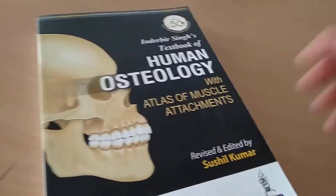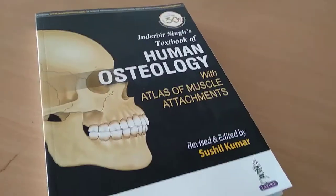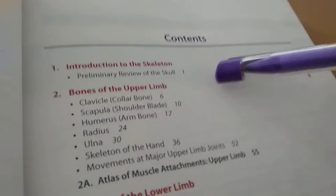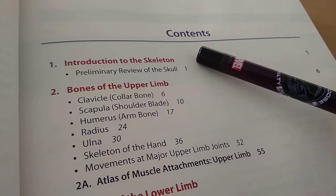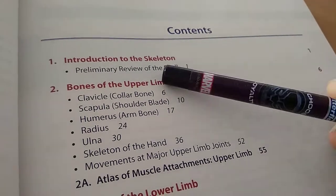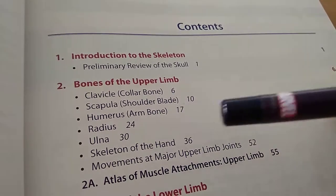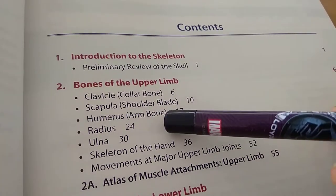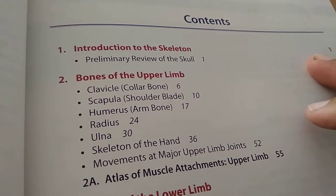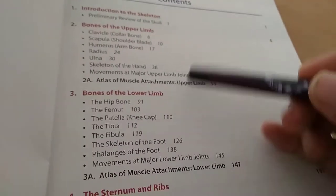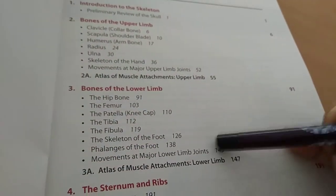You don't need this book if you are using Chaurasia - if you are using that, it already has osteology. But anyways, bones of upper limb: clavicle, scapula, humerus, radius, ulna, skeleton of the hand. Okay, joints - finally they come to joints, so they'll explain all the bones to you and finally come to the joints.